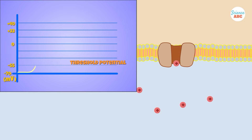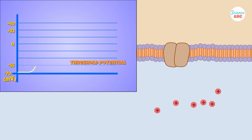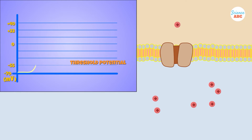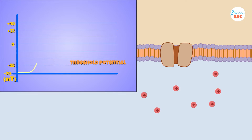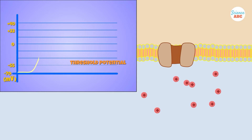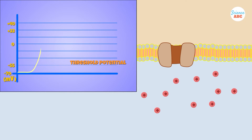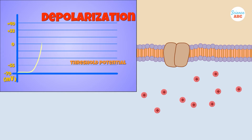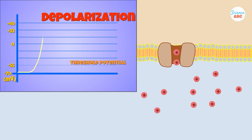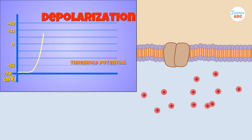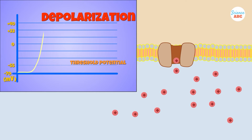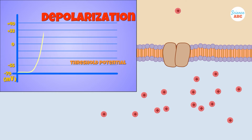This begins because it triggers voltage-gated sodium channels to open. These channels, when opened, cause a rush of many sodium ions into the cell from outside. This causes depolarization of the neuron, or a reversal of charge in its inner surface from negative to positive.